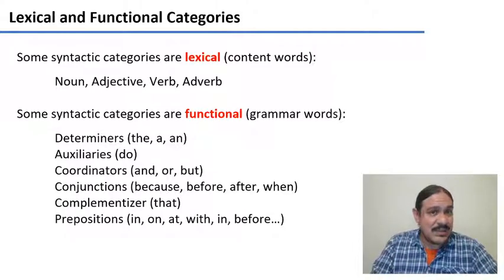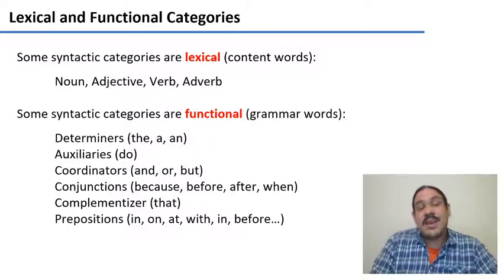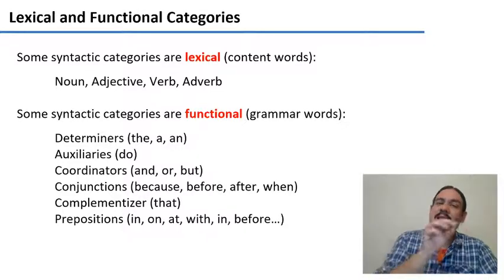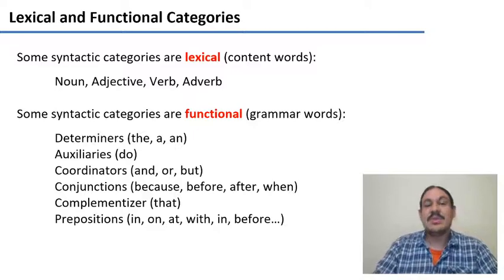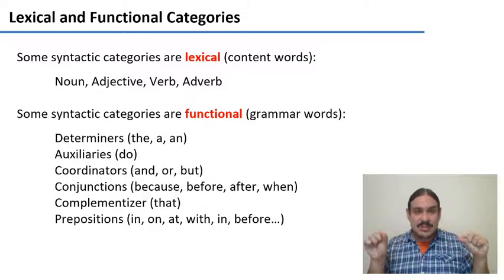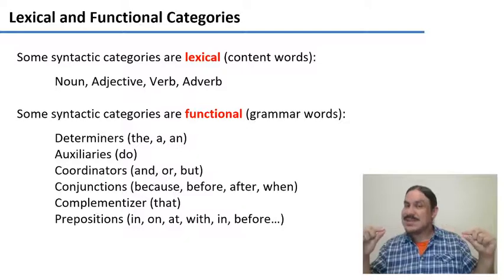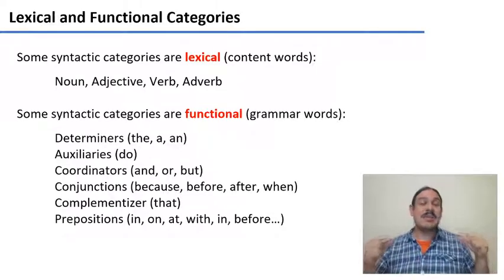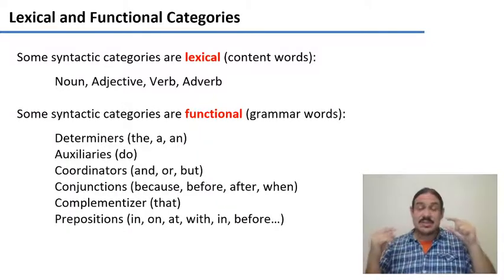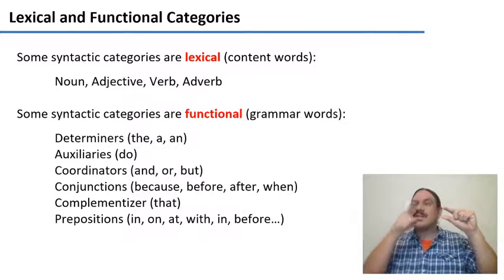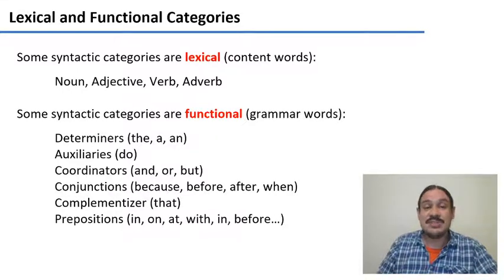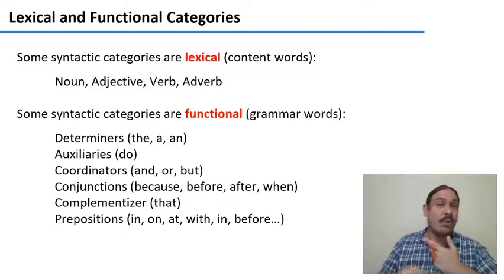Some syntactic categories, on the other hand, are functional — we also call them grammar words. We have categories like determiners, which you might also know as articles, like 'the' or 'a,' which don't have a lot of meaning but help you structure a sentence of English. We have auxiliaries like 'do,' as in 'do not eat that pizza.' We have coordinators, which can help you join two nouns, like 'pizza and breadsticks.' We can have conjunctions that help you join two sentences, like 'I eat pizza because it is delicious.' You can have complementizers, where you match a noun and a sentence: 'the pizza that everyone loves.' And you can have prepositions, which give you spatial and temporal information — in, on, at, with something, or 'before 3pm.'